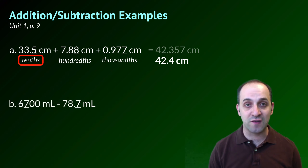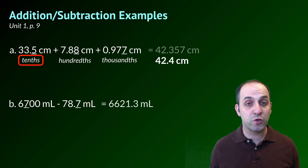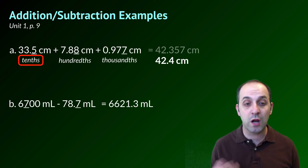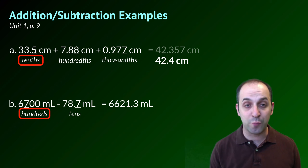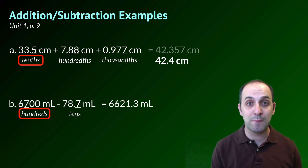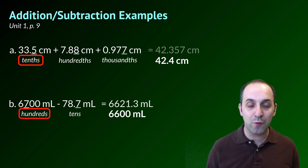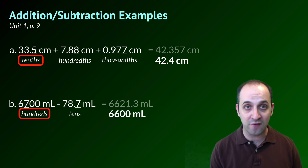Here's a subtraction example. Take a moment, pause the video, try this on your own, and then compare with me to see if you got the same answer. When we do this, we just do the subtraction first without worrying about rounding, and our answer comes out to be 6,621.3 milliliters. But now we apply the same rules — our first term is only precise to the hundreds place, so our answer can only be precise to the hundreds place. When we round off, we wind up with 6,600 milliliters as our best, most appropriate answer.